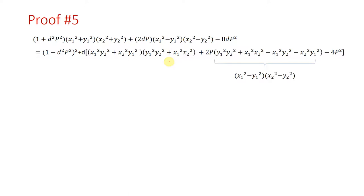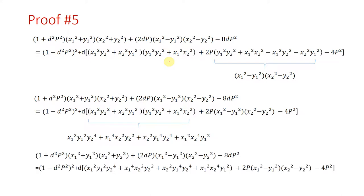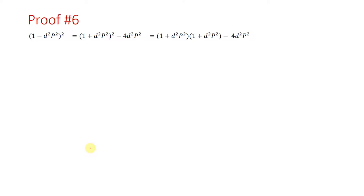Focus on this term — it can be written as the multiplication of two terms. This other term can also be written as a multiplication. This is the final form of that part of the equation. Now let's focus on the one minus d squared p squared value. The left side has a one plus d squared p squared multiplier, so we will reform this term accordingly.